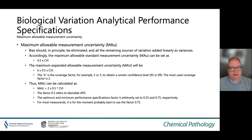The most commonly used coverage factor is 2. Thus, maximum allowable measurement uncertainty can be calculated as less than 2 times 0.5 multiplied by CVI. The factor 0.5 refers to the desired specification, and the optimum and minimal performance specifications are arbitrarily set at 0.25 and 0.75 respectively. For most measurements, it is probably best to use the factor 0.75.